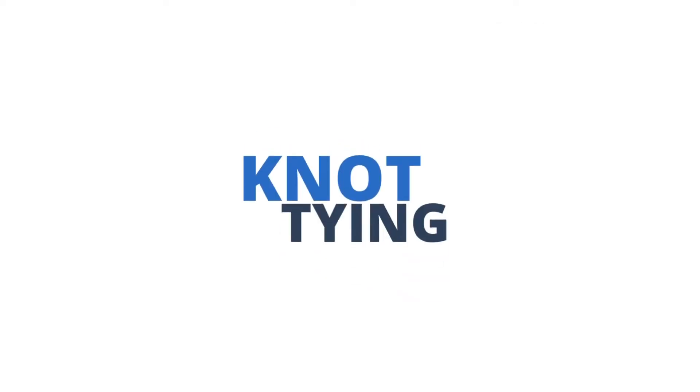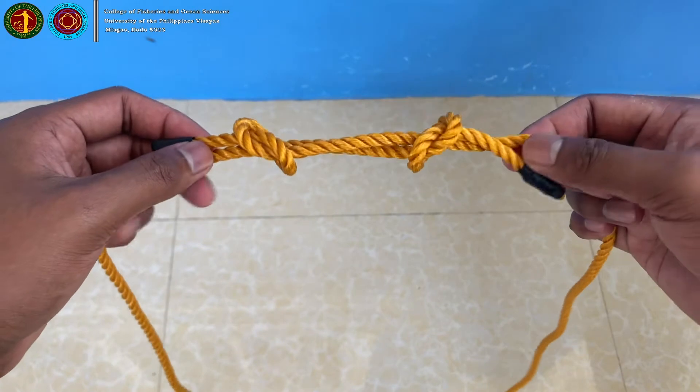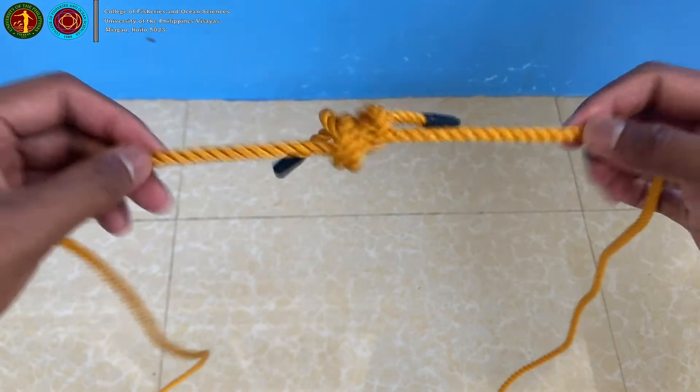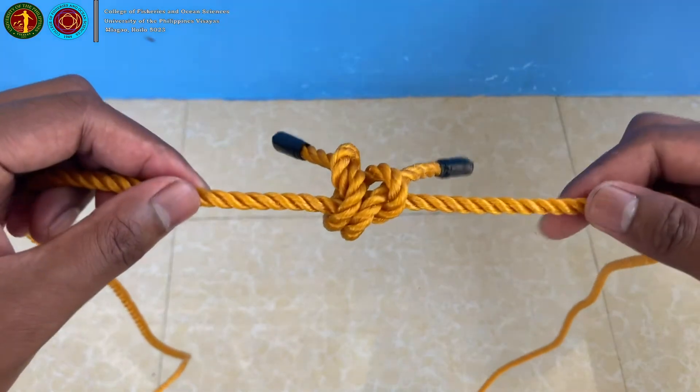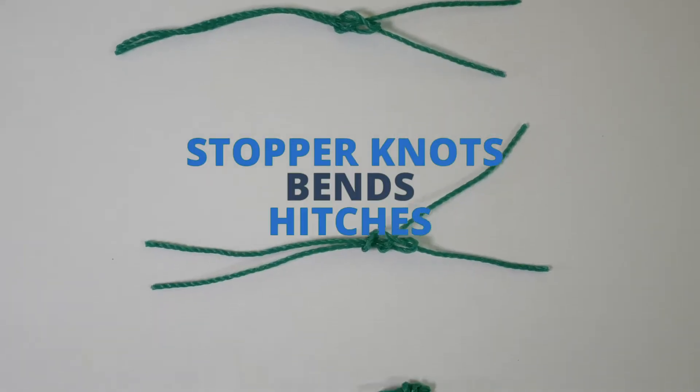Let us start with knot tying. A knot is a form of fastening when twines or ropes are looped and tightened on itself. In this section, we are going to discuss three types of knots: stopper knots, bends, and hitches.